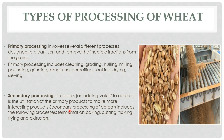Secondary processing of cereals, also called adding value to cereals, is the utilization of the primary products to make more interesting products. Secondary processing of cereals includes the following processes: fermentation, baking, puffing, flaking, frying, and extrusion.